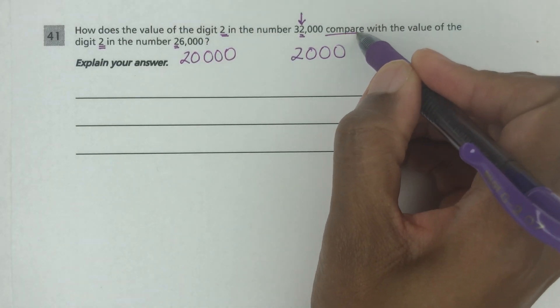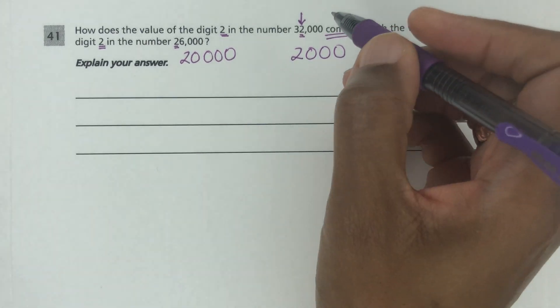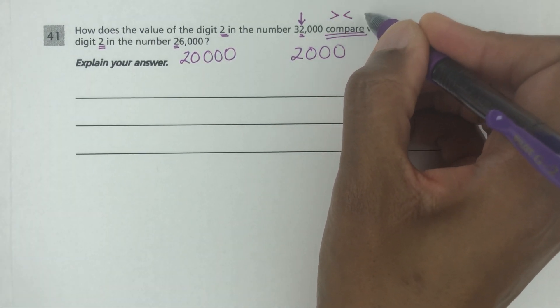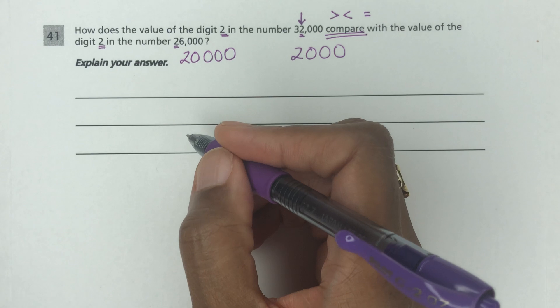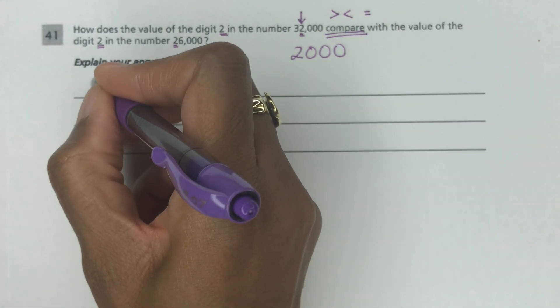When it says compare, all they want you to do is say whether the number is higher, lower, or equal to the other number. That's all they want you to do.